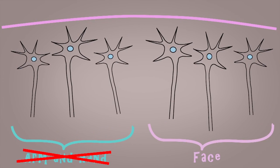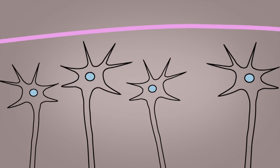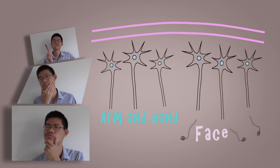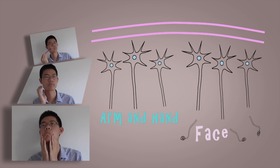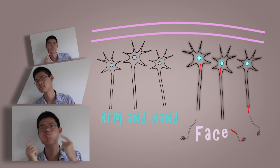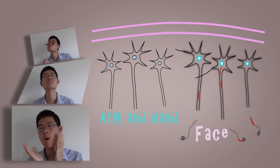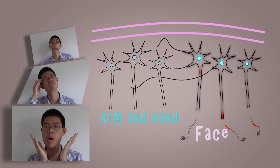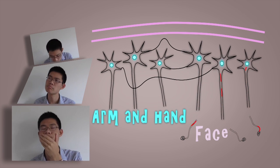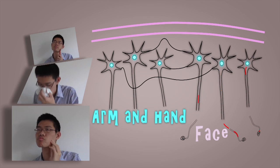For upper limb amputees, the cells in the face area get a bit greedy and hijack the unused limb cells in the cortex. This invasion occurs by making new connections. Whenever upper limb amputees touch a part of their face, which is quite a lot during any given day, not only are the cells in the face area stimulated, but the connected limb cells of the cortex are also stimulated, therefore tricking the brain into feeling phantom sensations in the amputated limb.